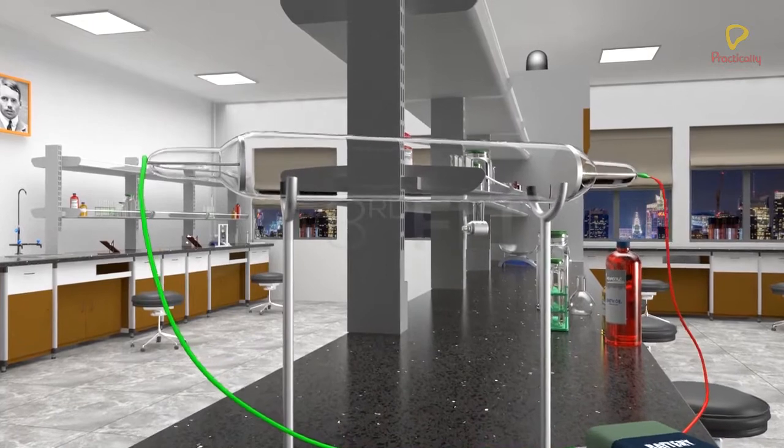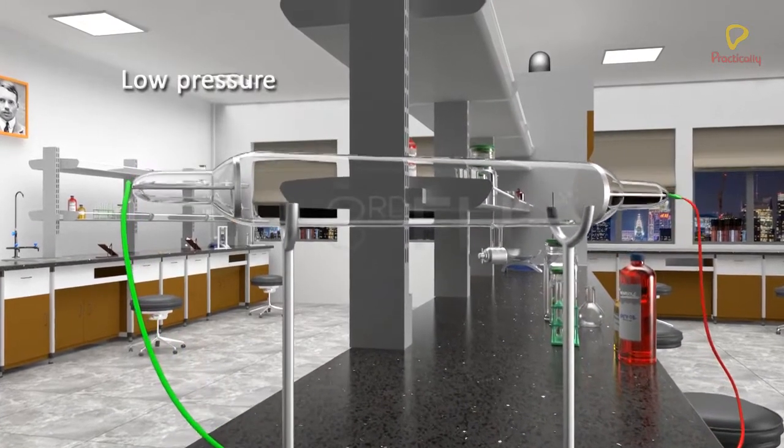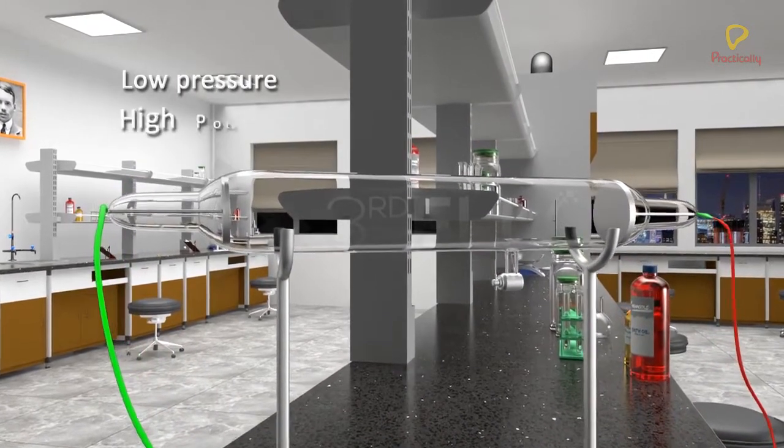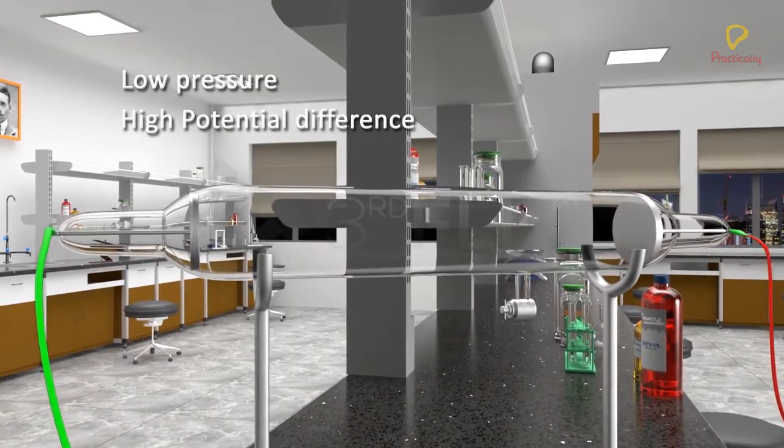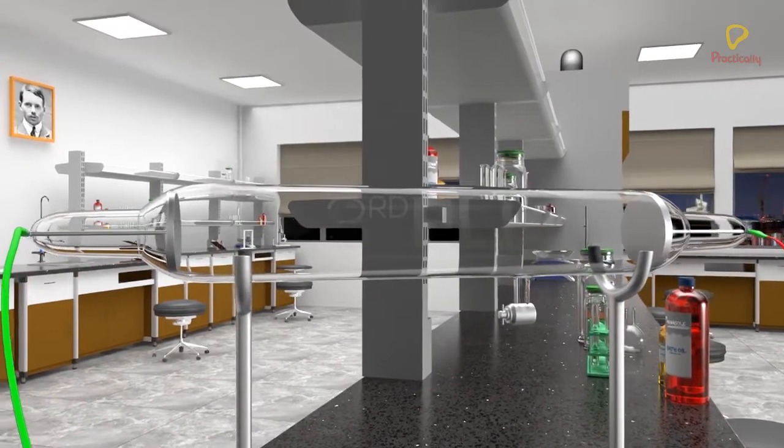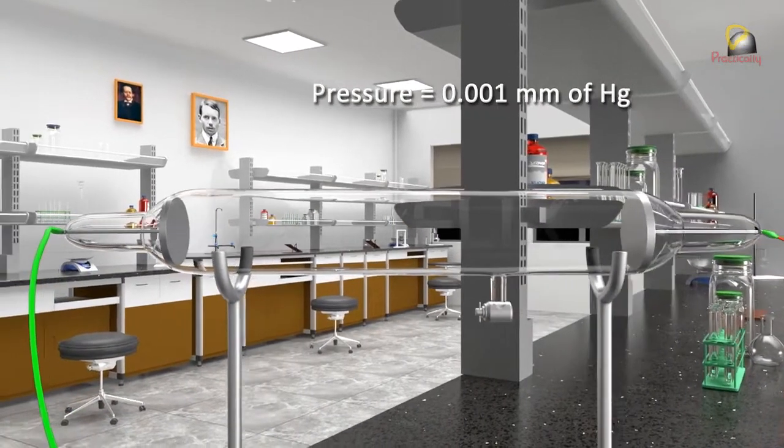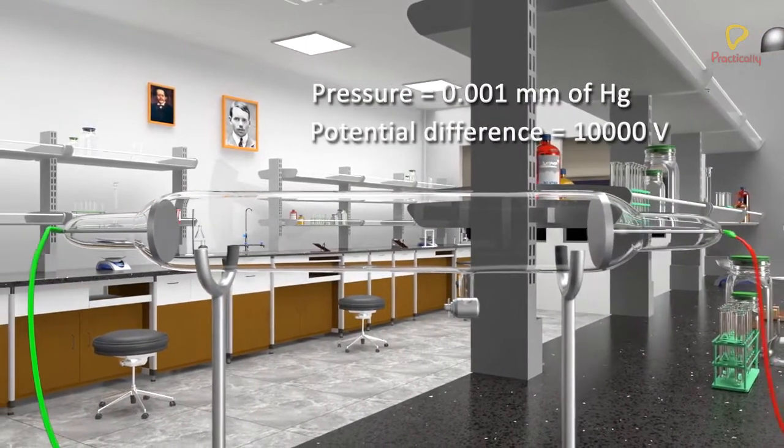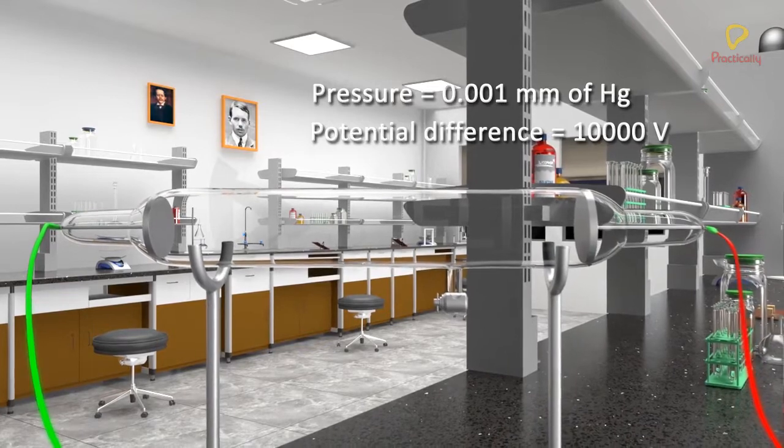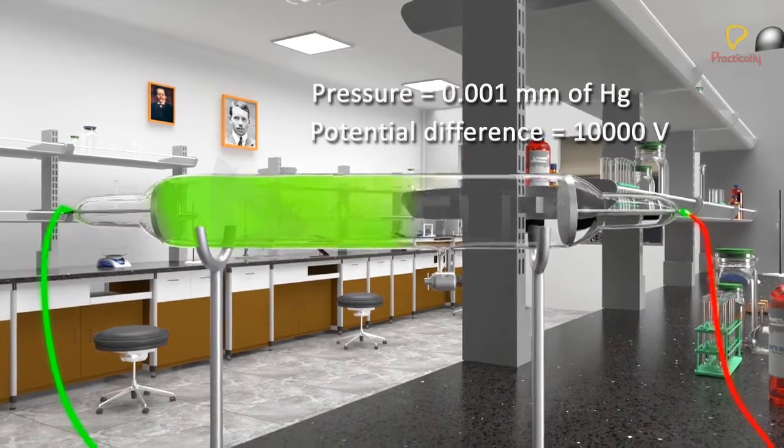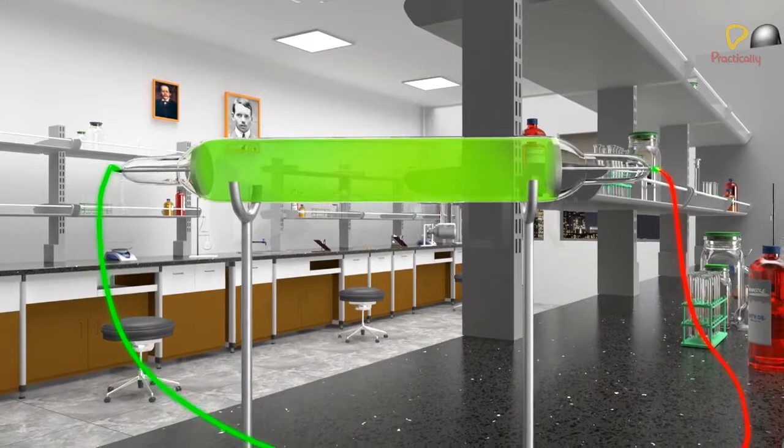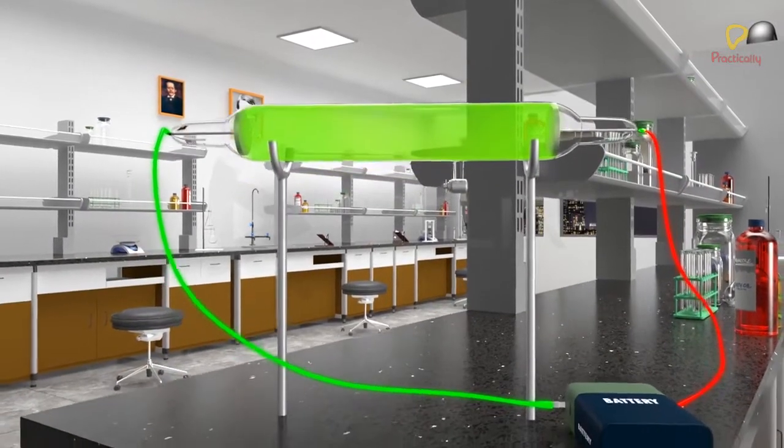In this setup, Crookes observed that an electrical discharge through the gas took place only when the pressure within the tube was lowered to 0.001 mm of mercury and the potential difference between the electrodes was as high as 10,000 volts. This is when current starts flowing inside the tube.